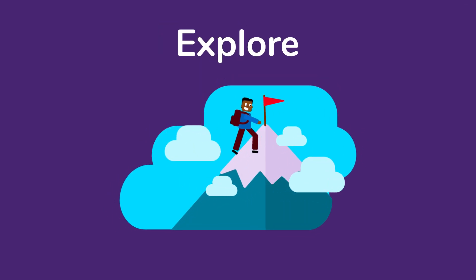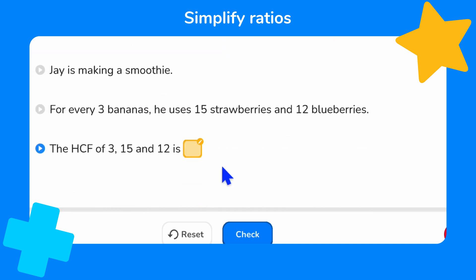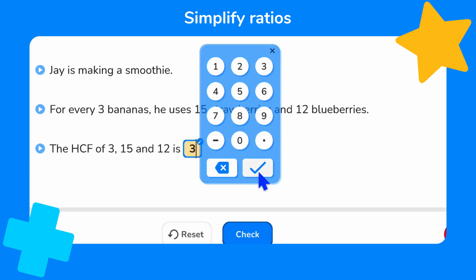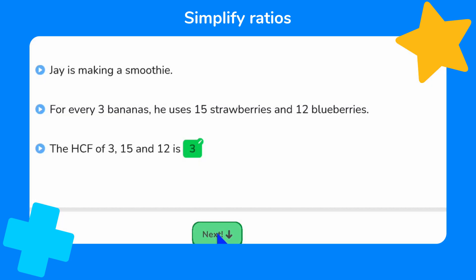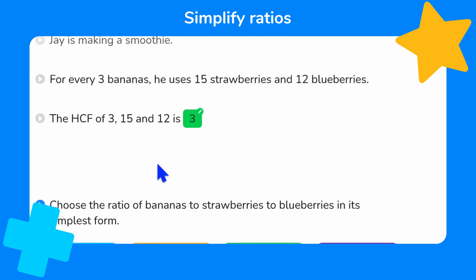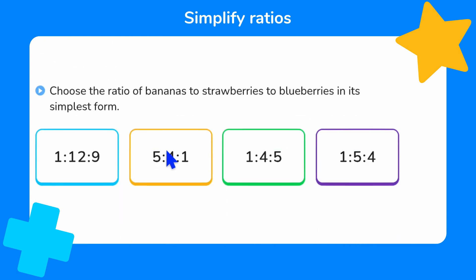Finally, let's explore this a bit more by applying what we've just learned to a real-life situation. Jay is making a smoothie. For every three bananas, he uses 15 strawberries and 12 blueberries. The factors of 3 are 1 and 3. The factors of 15 are 1, 3, 5 and 15. And the factors of 12 are 1, 2, 3, 4, 6 and 12. So the highest common factor of these three numbers is 3. We can now divide each part of the ratio by 3: 3 divided by 3 is 1, 15 divided by 3 is 5, and 12 divided by 3 is 4. Which do you think is the ratio of bananas to strawberries to blueberries in its simplest form?